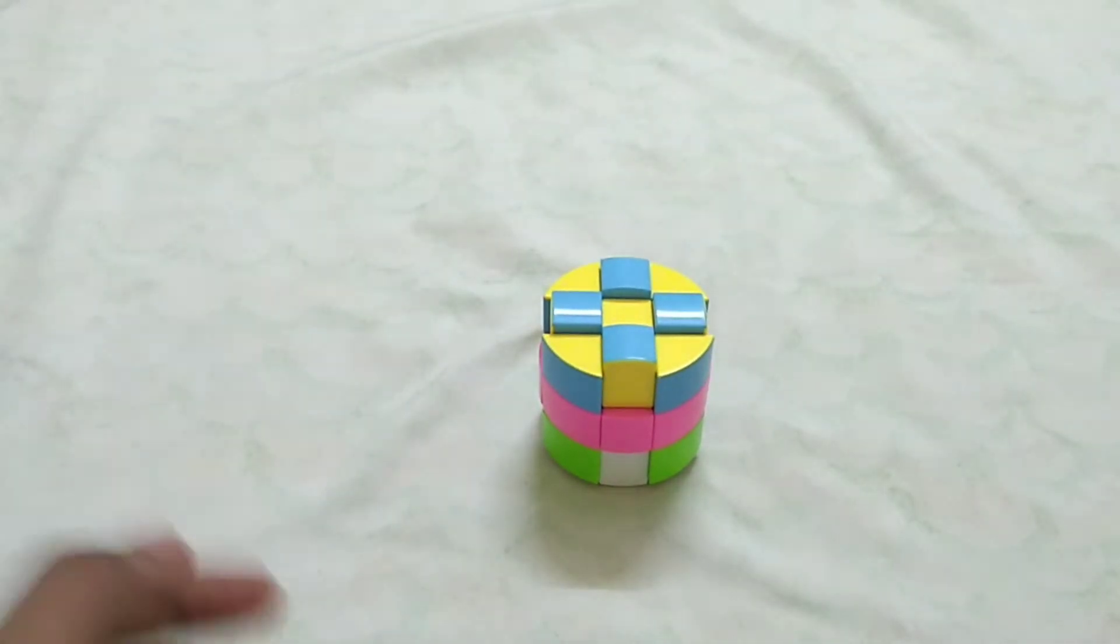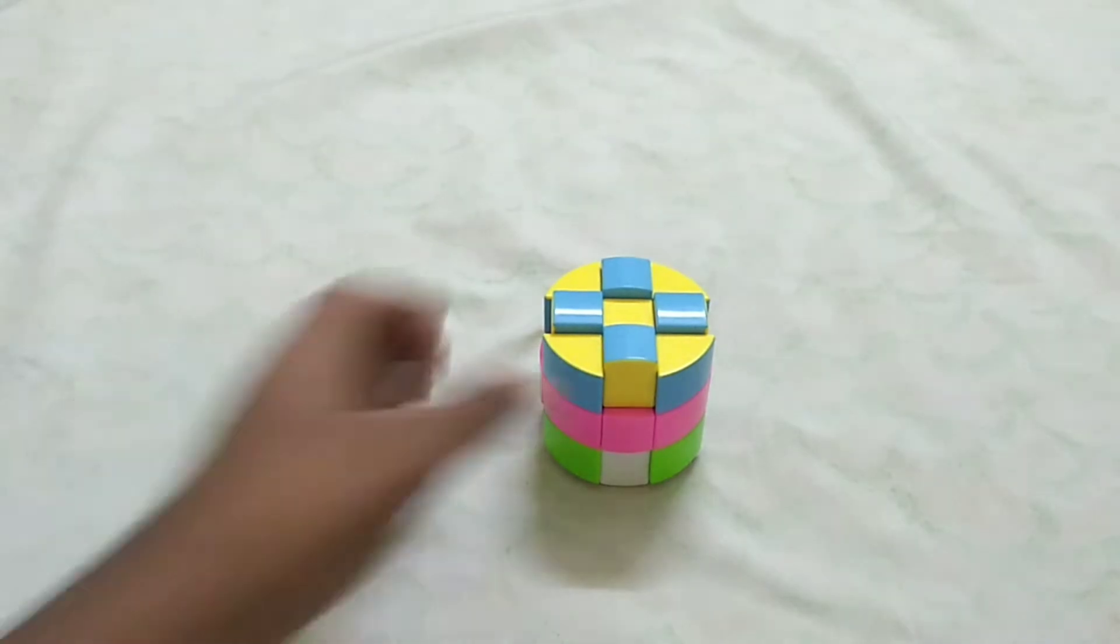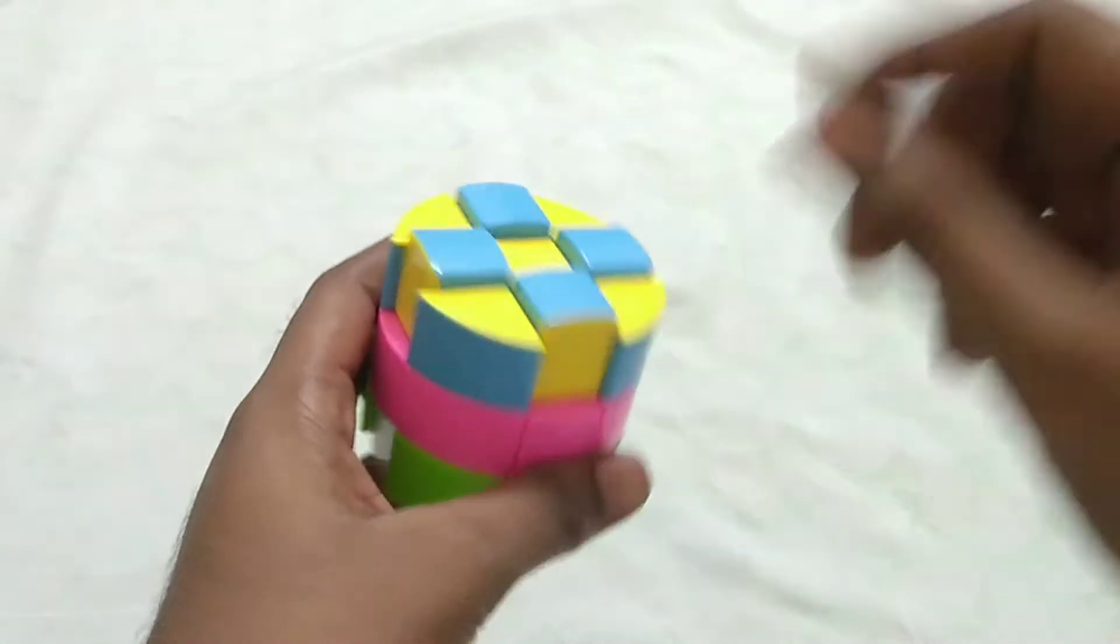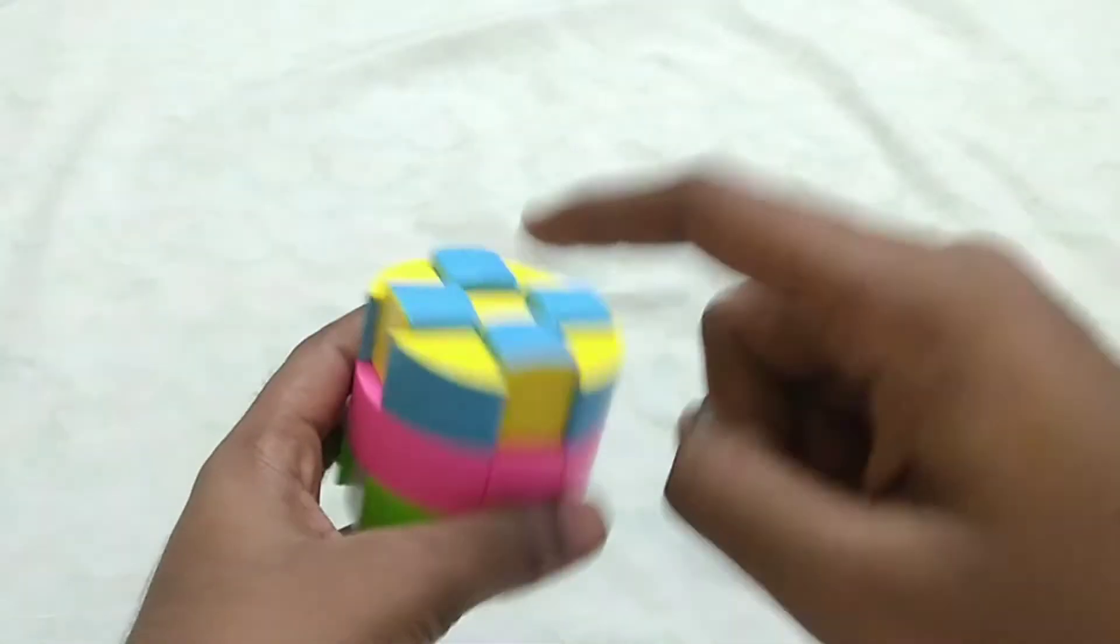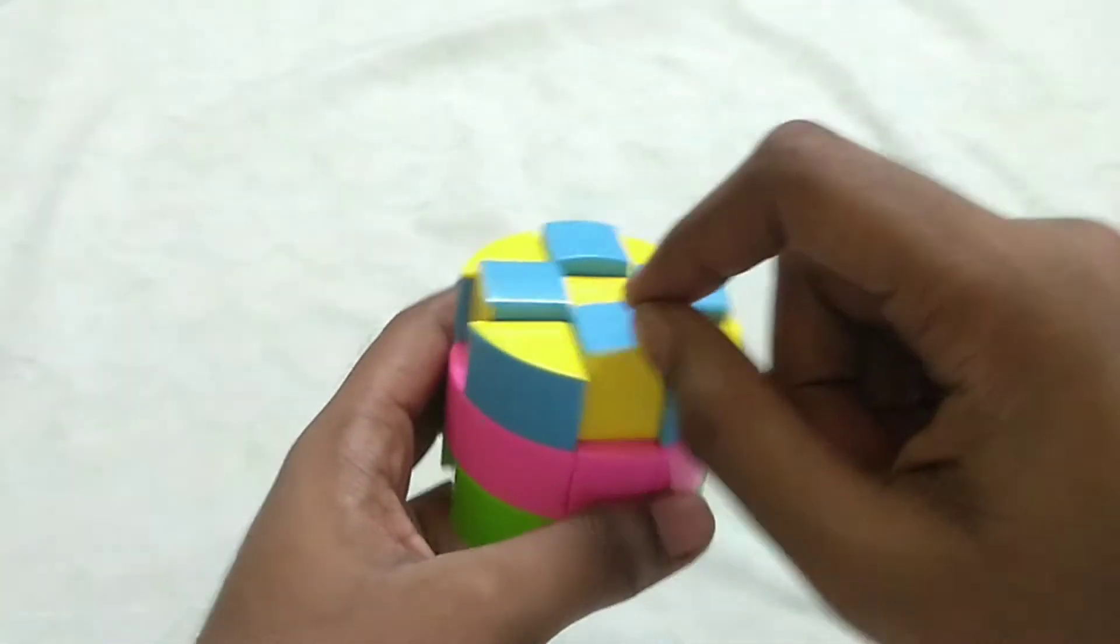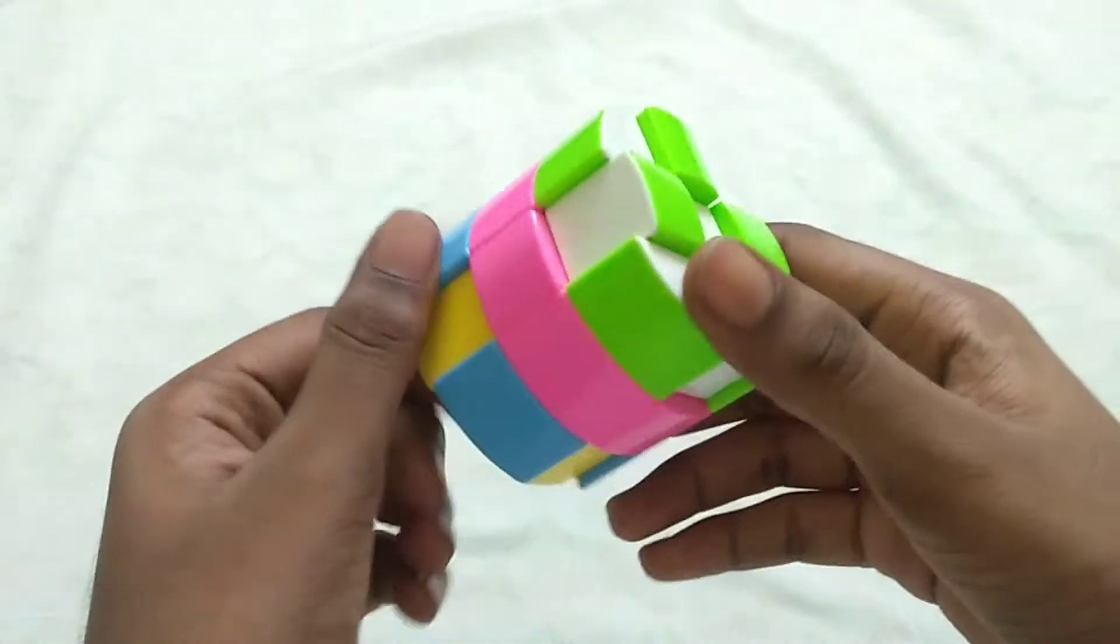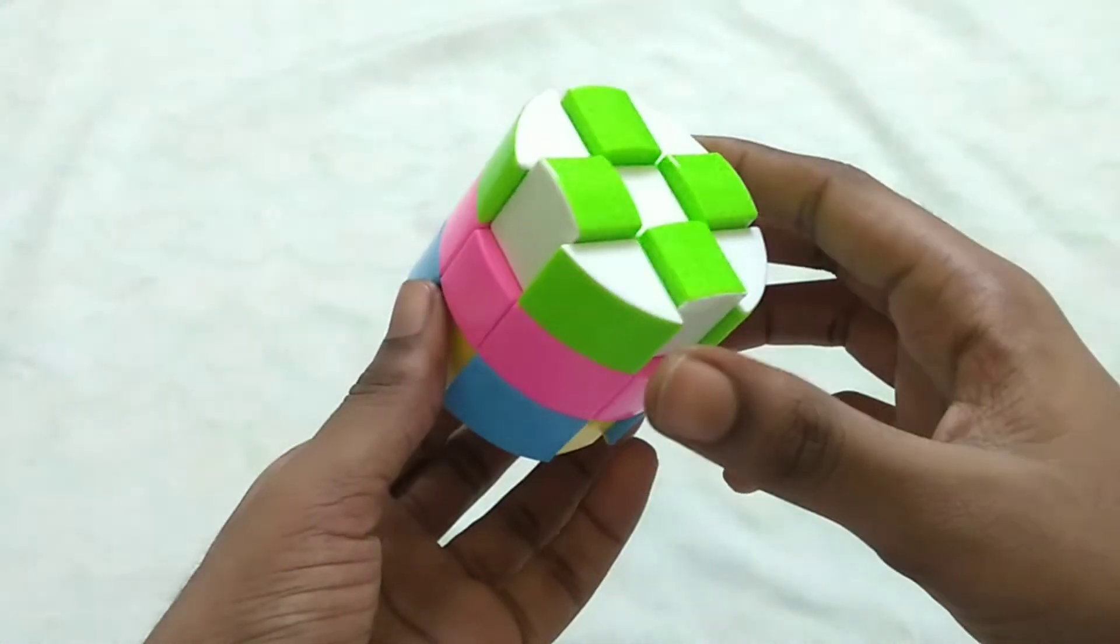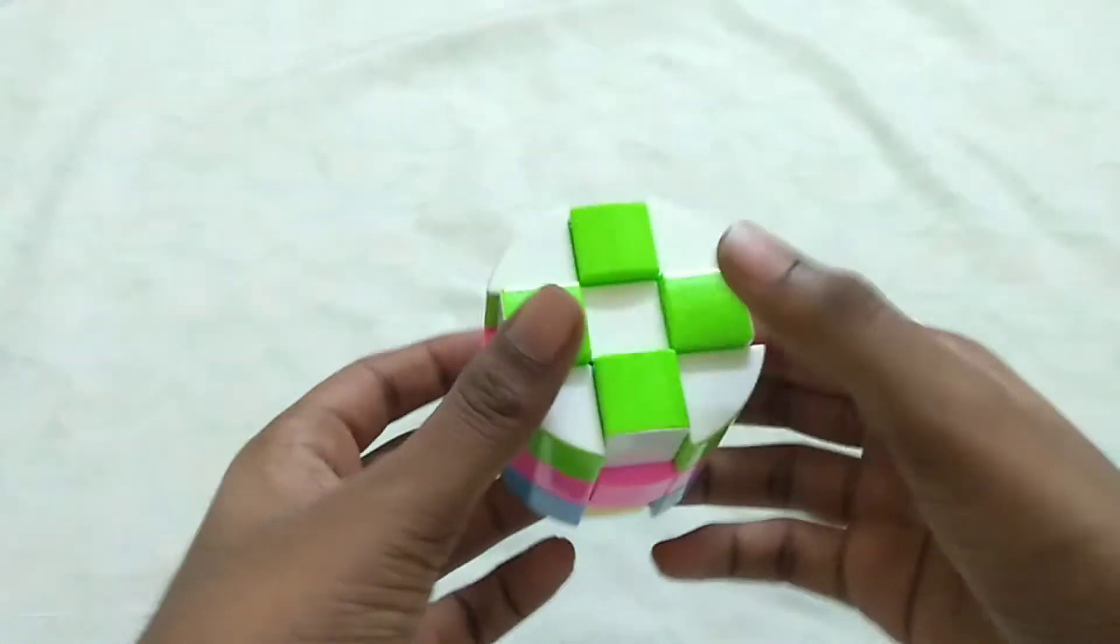Actually superflip is nothing but we need to flip the edge piece in its place. If you see here, this blue color should be here and this yellow should be here. And this edge has been flipped, and like this every edge in the cube has been flipped like this. It just looks like a gamepad.